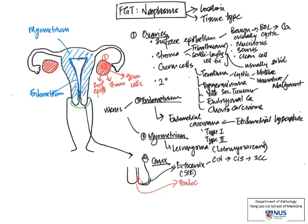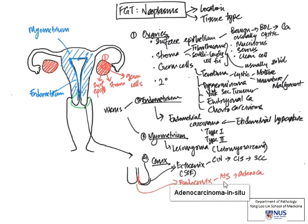The endocervical canal or the endocervix is lined in contrast by glandular epithelium, and this gives rise to adenocarcinoma. Again, there is a premalignant phase which is adenocarcinoma in situ — this is just before the basement membrane is invaded, and the cells do look malignant. And then finally, this can progress to adenocarcinoma.